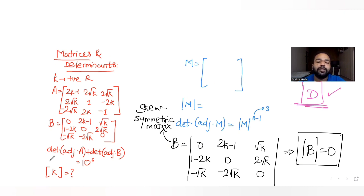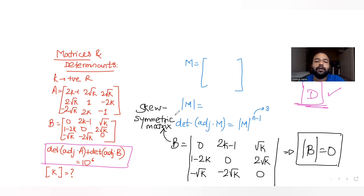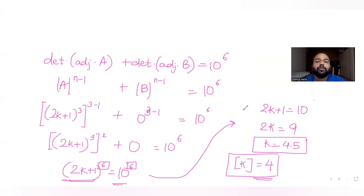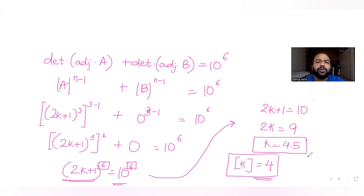The correct answer is option D. I hope you understood how to solve this type of question — we used the idea that det(adj M) = det(M)^(n−1), found the determinants of both matrices, and solved for k. The value of k was 4.5 but the greatest integer function gives 4. I'll meet you tomorrow with the next JEE Advanced question. Please like, share, and subscribe, and share these videos with friends preparing for JEE Advanced. Thank you!